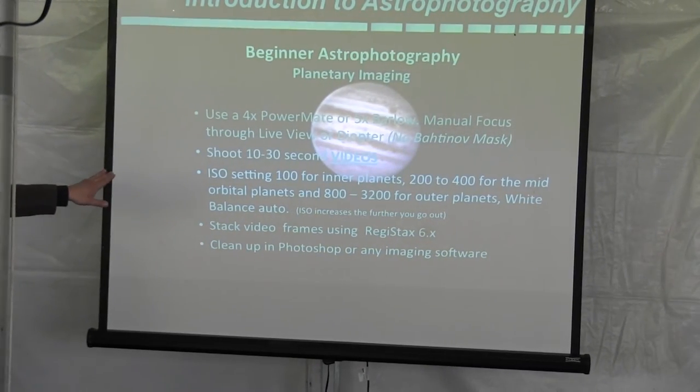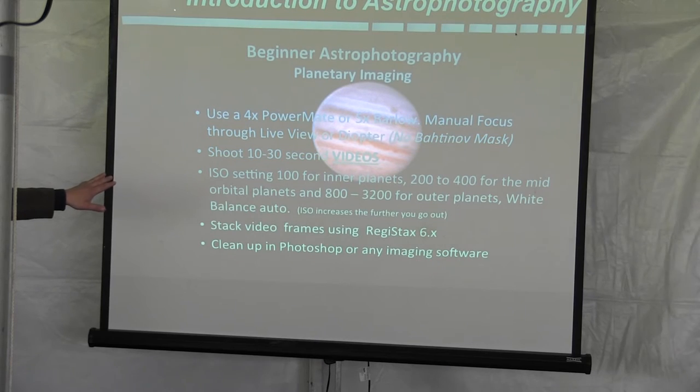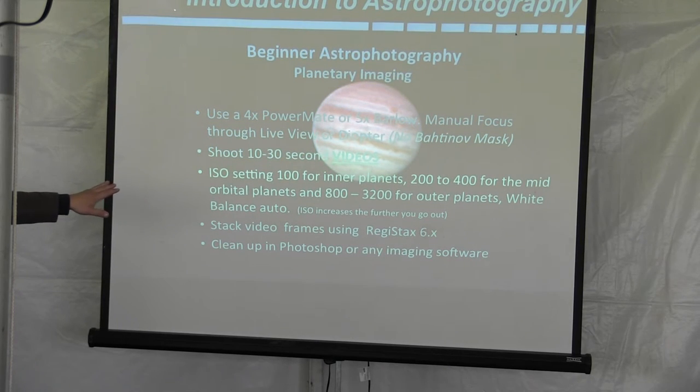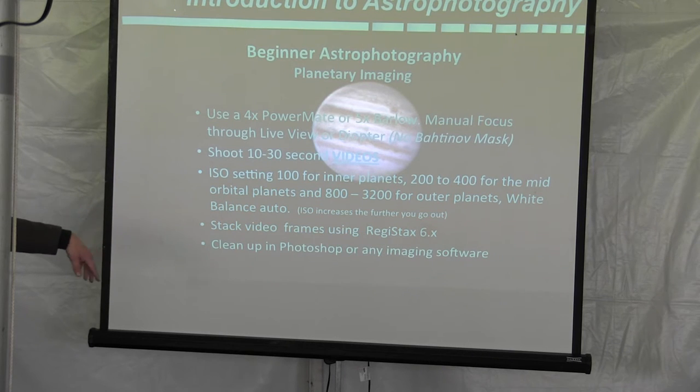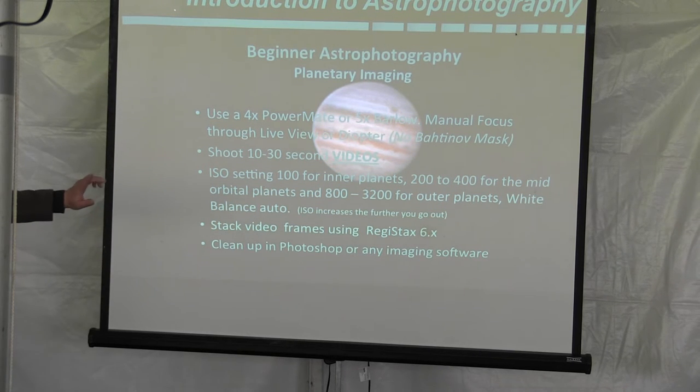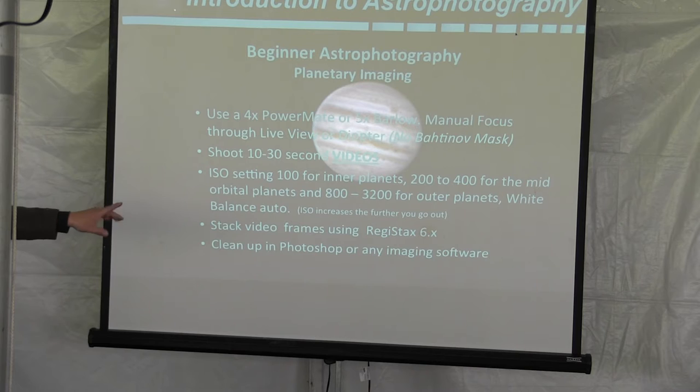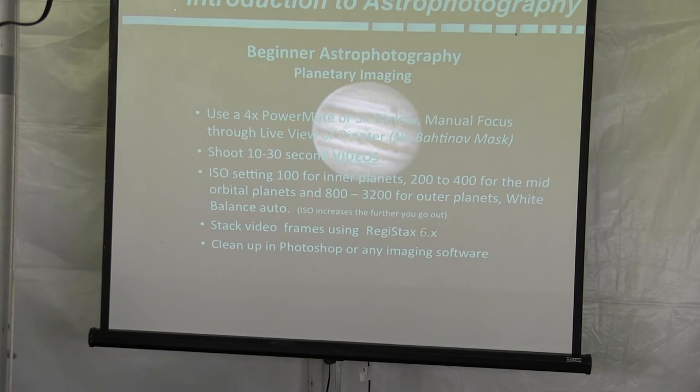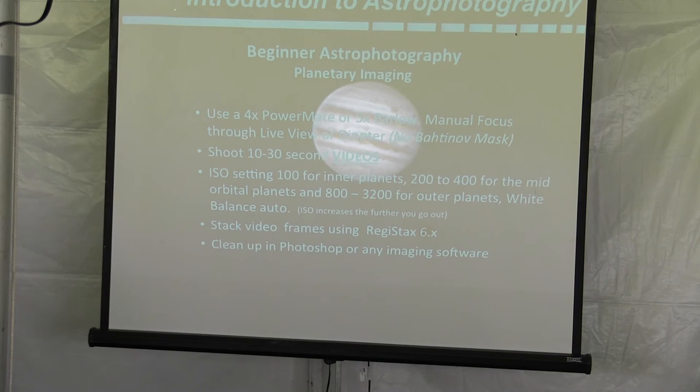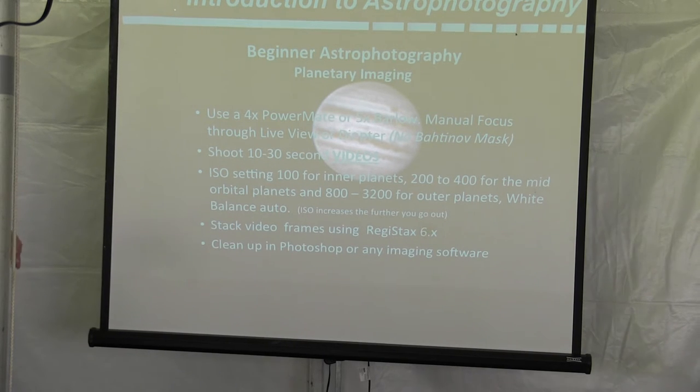So the inner planets, the outer planets, for Venus and Mercury, you're going to be at about 100. As you go out to Jupiter and Saturn, that's about the right ISO setting. And then by the time you're going out to Neptune and Uranus, you want to get as high as 3200 just to see it.